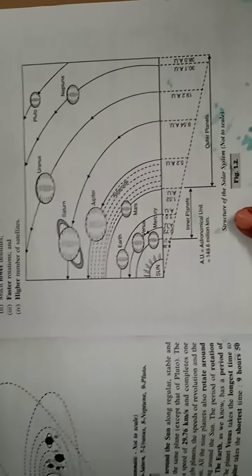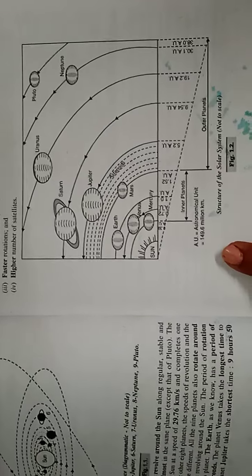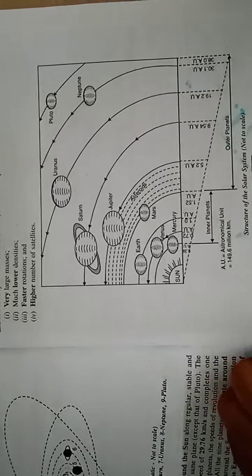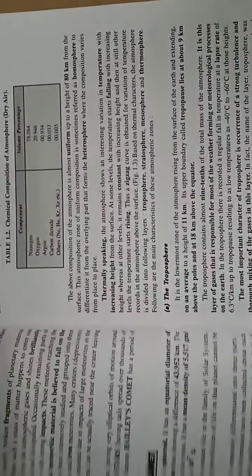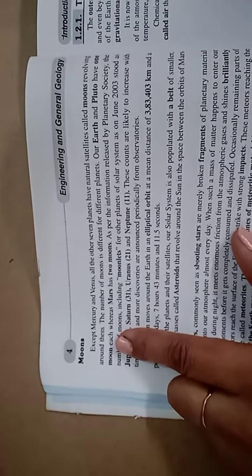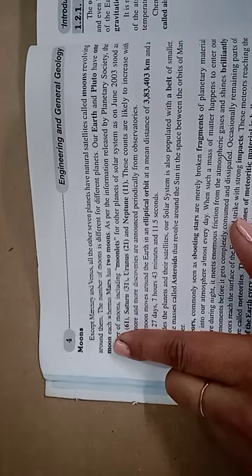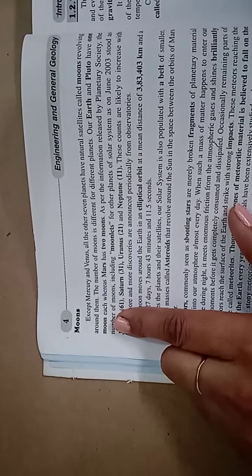Please don't forget to draw this picture in your copy — it is important for all competitive exams, so draw it in a proper way. Regarding moons: except Mercury and Venus, all other seven planets have natural satellites called moons revolving around them, and the number of moons differs from planet to planet.